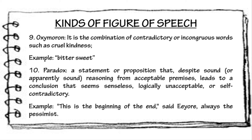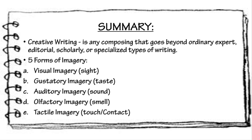So that's it. But before we officially end our discussion, let us have a summary of what we have learned today. Creative writing is any composing that goes beyond ordinary expert, editorial, scholarly, or specialized types of writing. Then we have the five forms of imagery: visual, gustatory, auditory, olfactory, and tactile imagery.